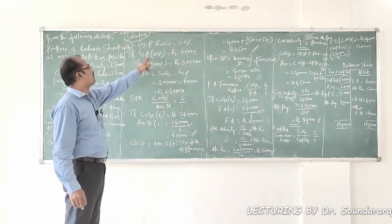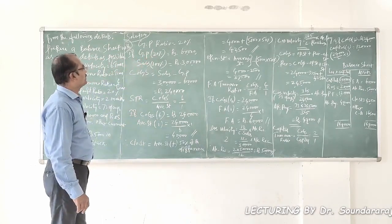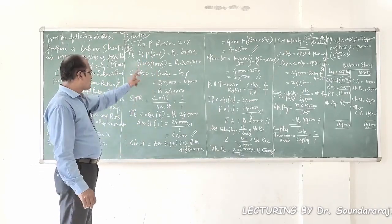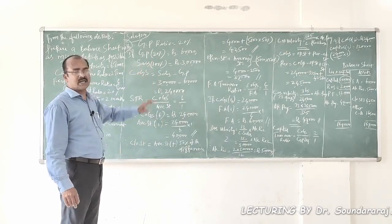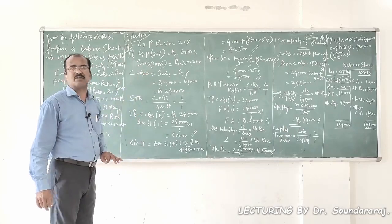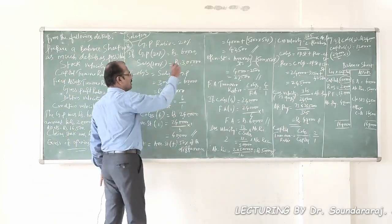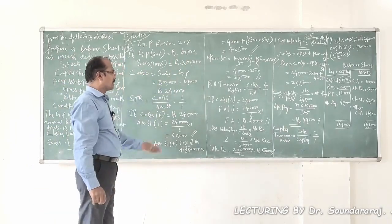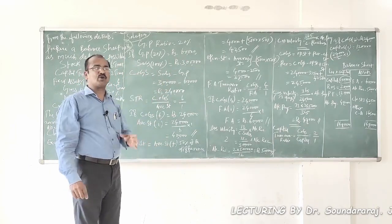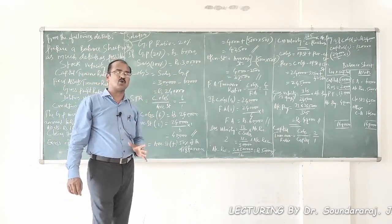If gross profit is 20% and amounts to 60,000 rupees, then sales with 100% weightage is 3 lakh rupees. So 60,000 divided by 20, into 100, gives you 3,00,000 rupees. When gross profit is 60,000 rupees...